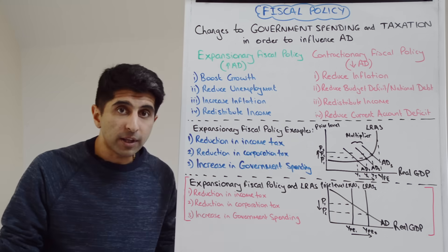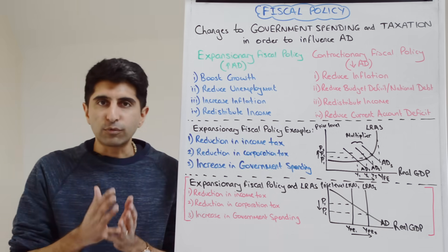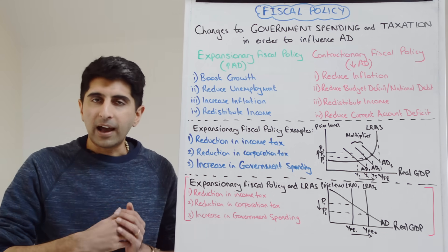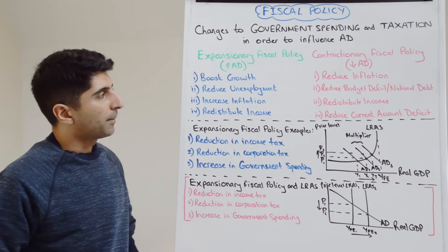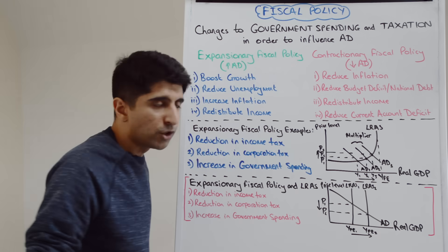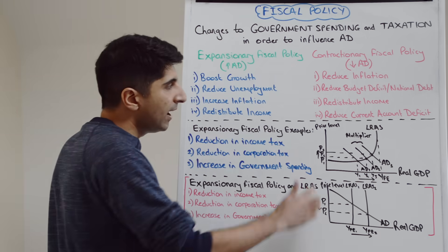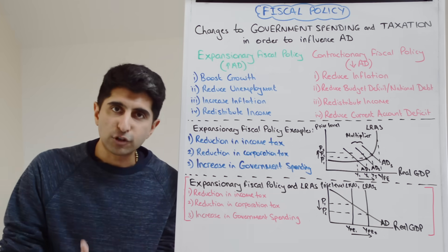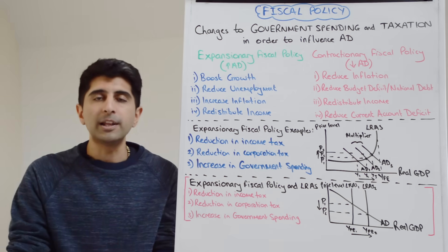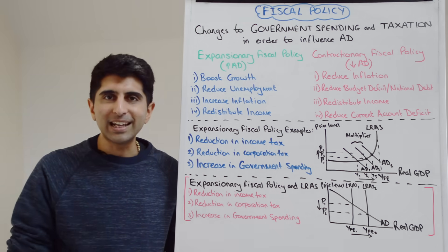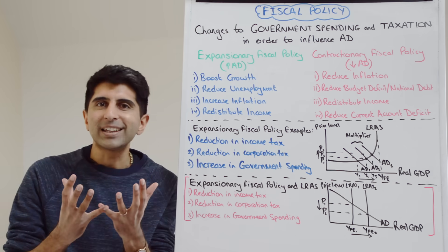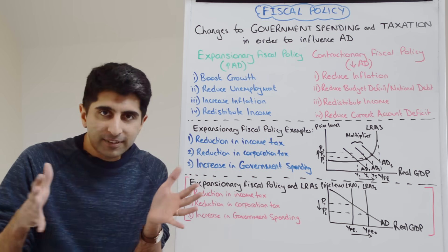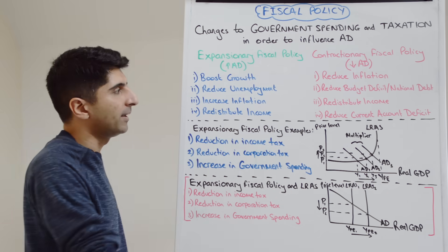But another reason, again not linked to AD, is to redistribute income. This could be via higher taxation on the rich, to gain that money and then redistribute it via income top-ups for the poor, so it could be to reduce income inequality in society. Another reason would be to reduce the current account deficit. If AD is reduced because of contractionary fiscal policy, incomes will be lower in the economy and therefore there'll be less sucking in of imports — less expenditure on imports — and, ceteris paribus, that will reduce a current account deficit, a trade deficit basically.